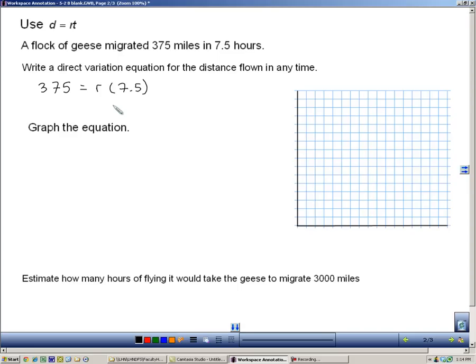We need the r, or in this case, the constant of variation. So I'm going to divide both sides by 7.5, and that's going to give me an r of 50. Now, that r acts like our k here, so I'm going to write my direct variation, d equals 50t. So that's the direct variation that we're going to use in this particular problem.